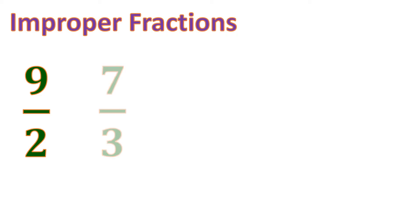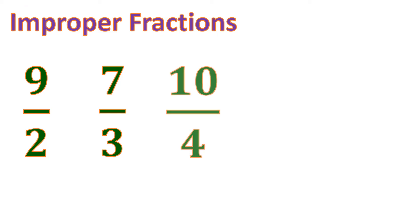Another fraction: seven-thirds. This is also an improper fraction — the numerator is seven and the denominator is three. Another one: we have a numerator ten and denominator four, so this is improper because the numerator is bigger than the denominator.